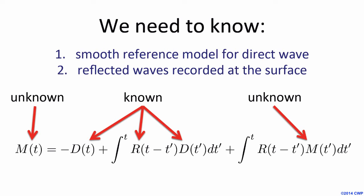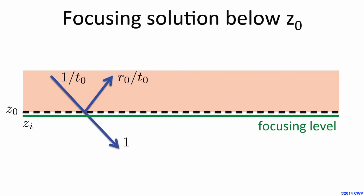This tells us what we need to create the focusing solution: we need to know the direct wave, for which we need the macro model, and we need the reflected waves recorded at the surface — exactly the same things needed for any routine seismic imaging. To create focusing solutions you don't have to do anything extra other than solving this integral equation. I want to show you another focusing solution at an intermediate level in my medium, because you can play this game wherever you want. Another focusing solution is defined as a solution of the system made homogeneous below my focusing level, having only one unit down-going wave below that level.